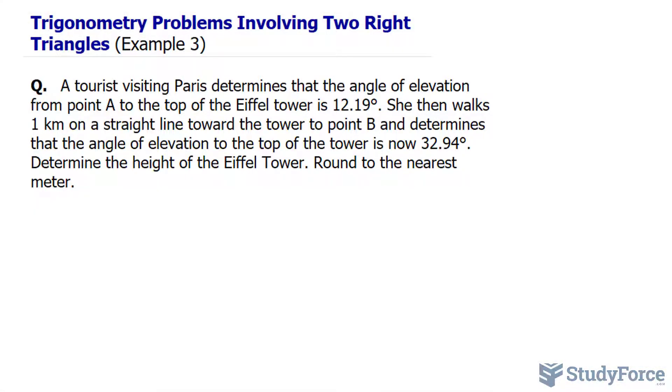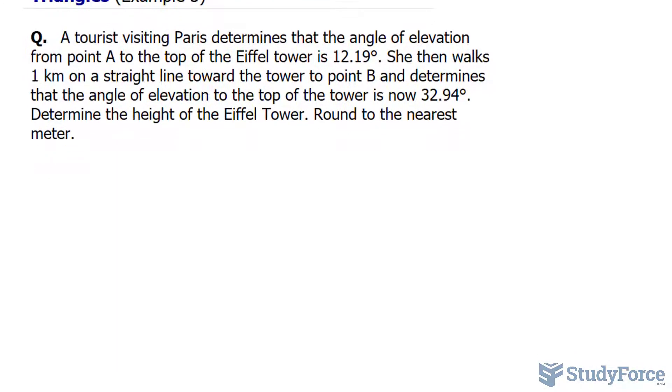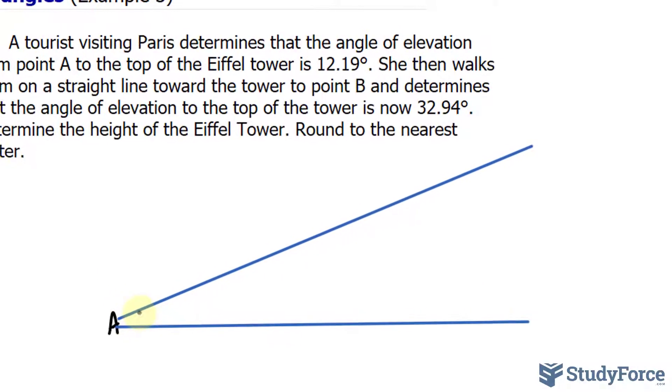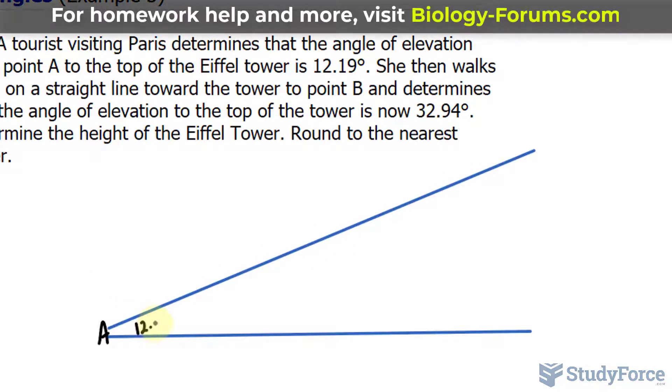I think the best thing to do here is to draw a picture of what's happening. So we have point A being right here, and the angle of elevation happens to be 12.19 degrees. That's the angle which this line makes with the horizontal. Let me also create a horizontal line like this. This angle is 12.19 degrees.